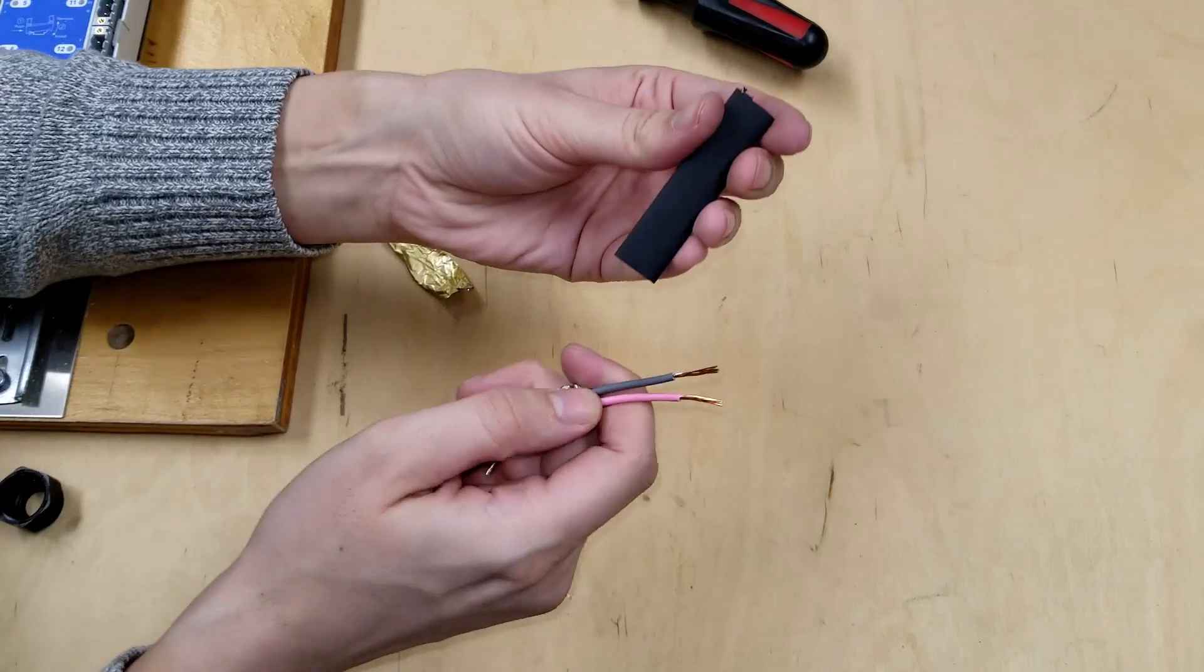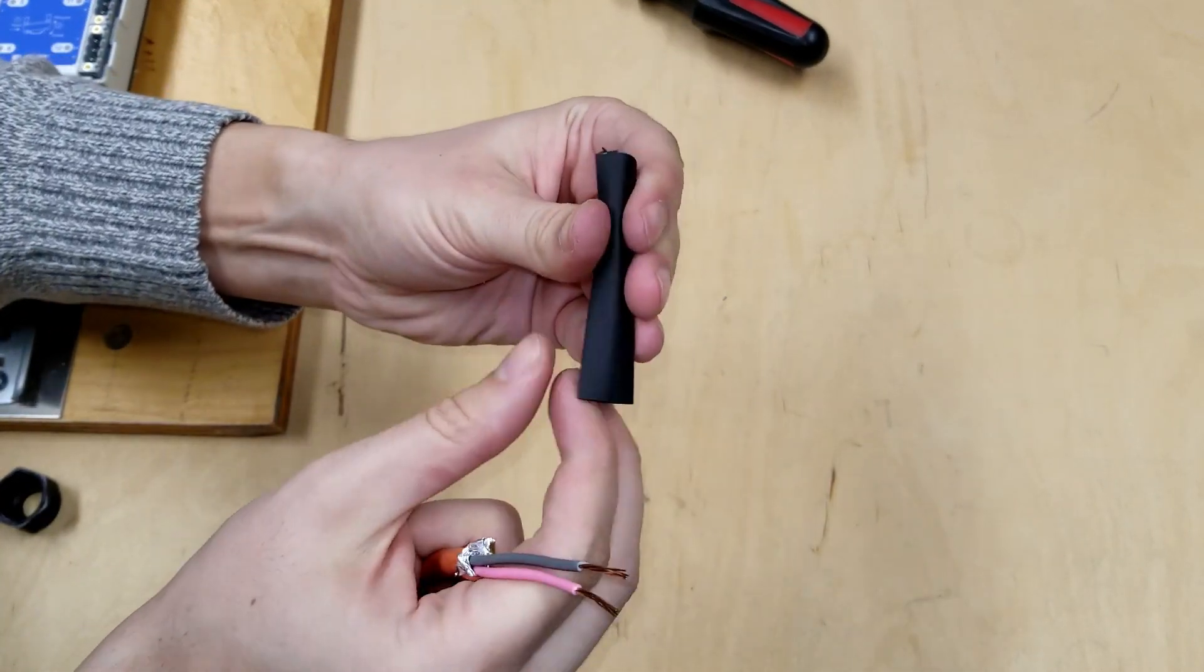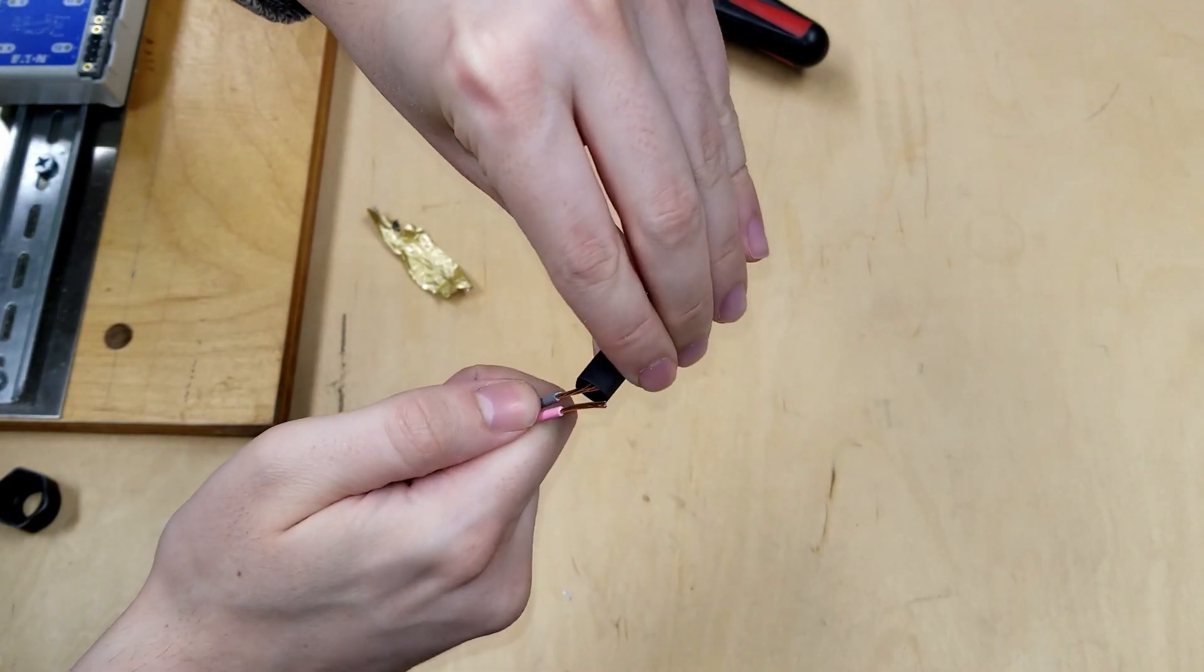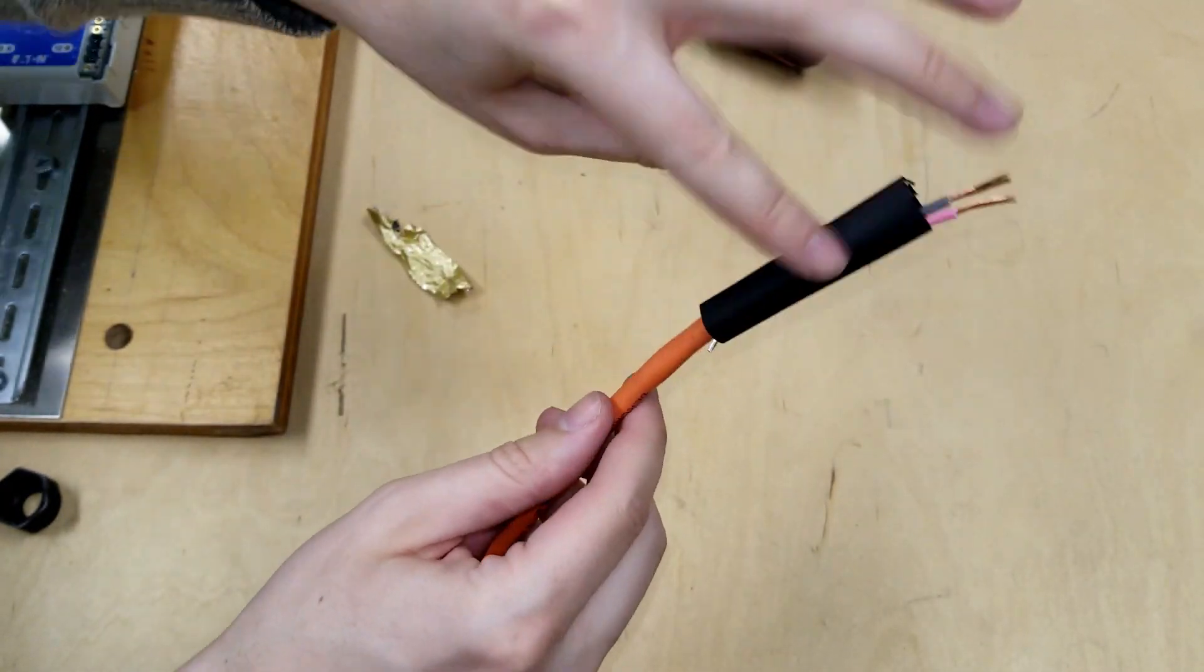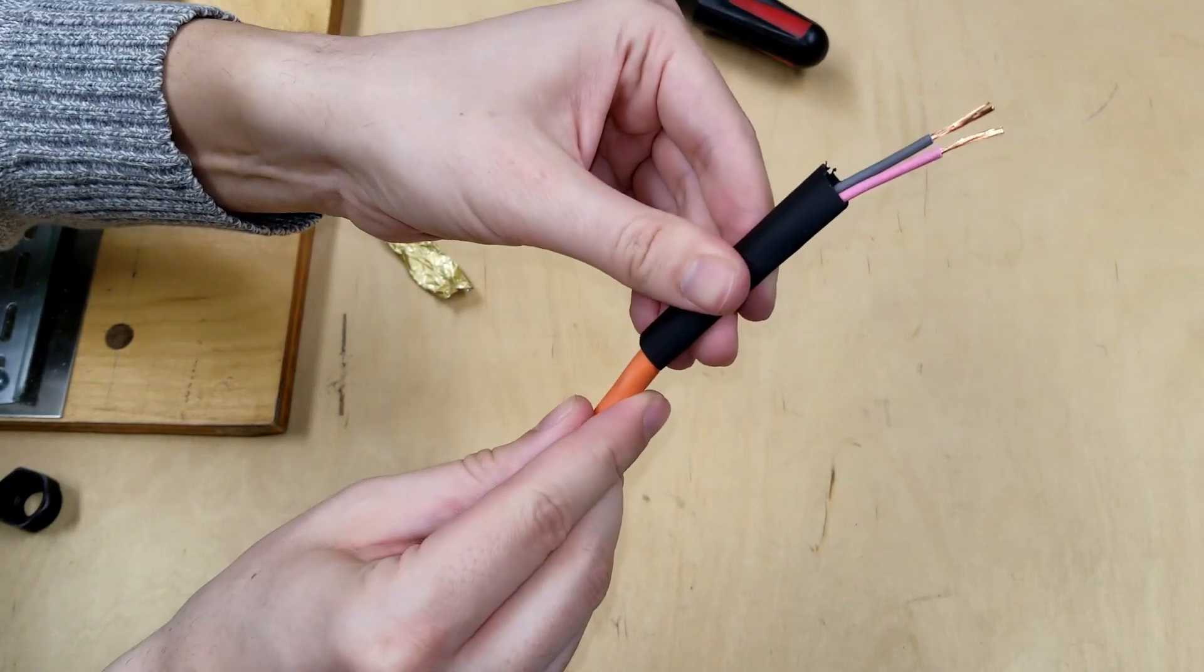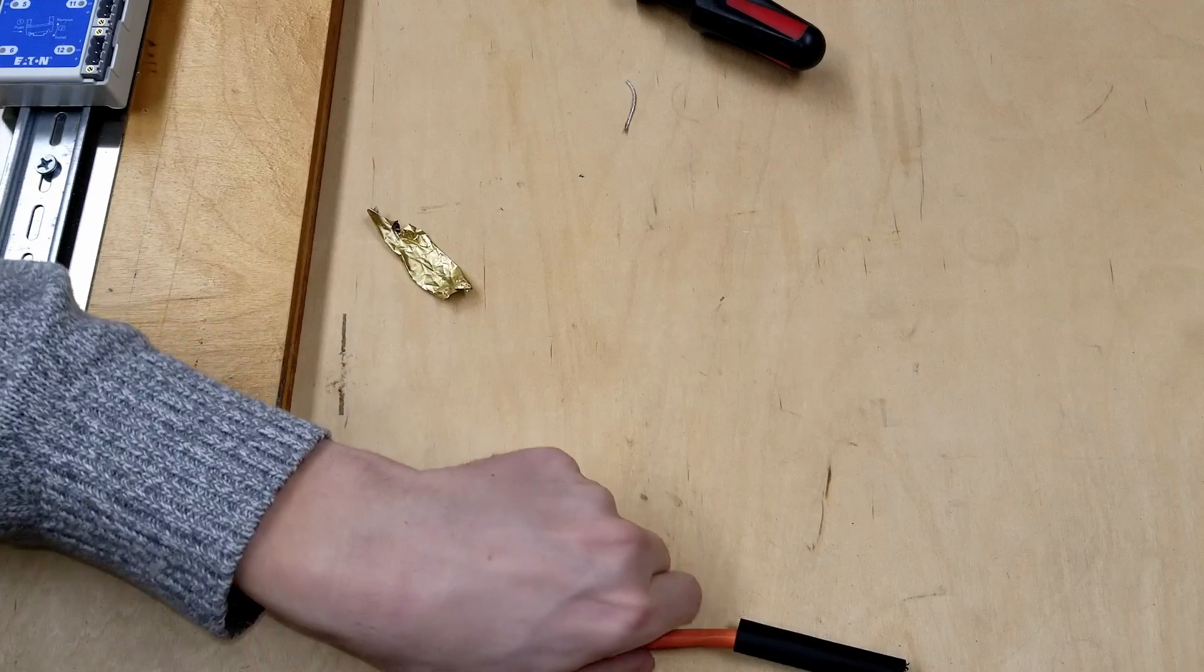Then take out some heat shrink tubing. Use the heat shrink tubing to cover the excess foil and the shield drain wire. Heat shrink tubing works best for this application, but tape can also work if heat shrink isn't available.